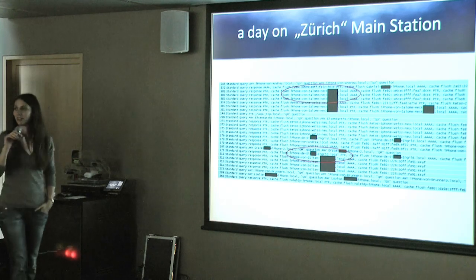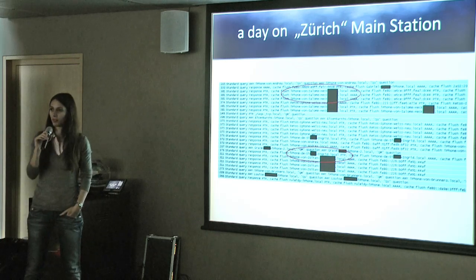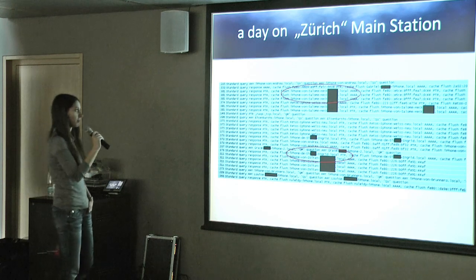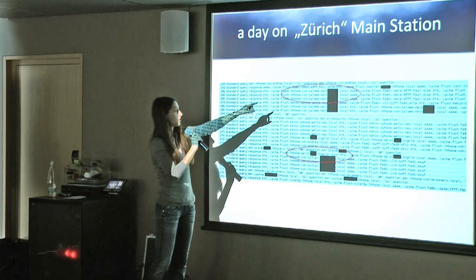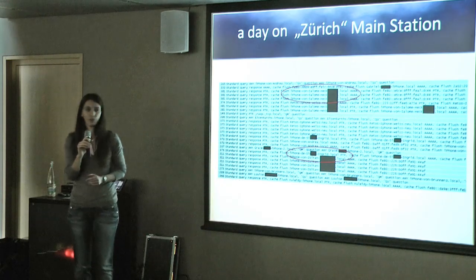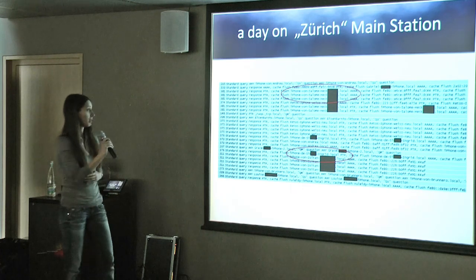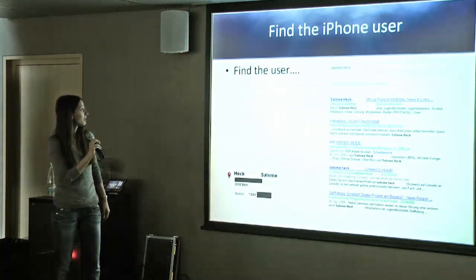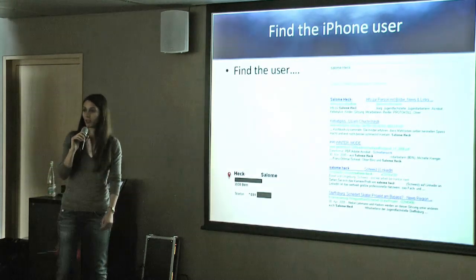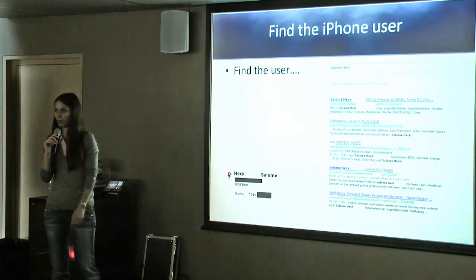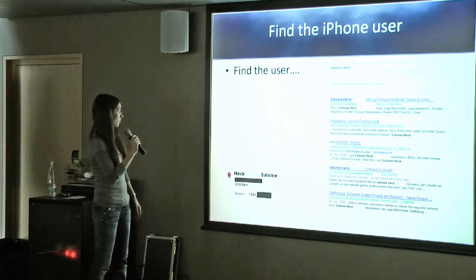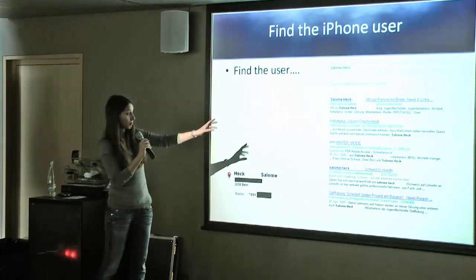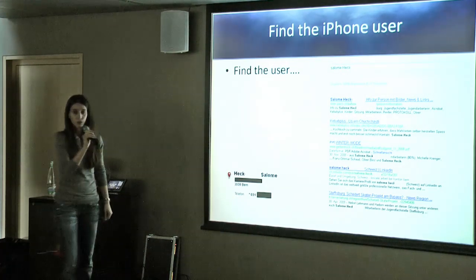We did this at the main railway station in Zurich and obtained information about iPhone users. Some people really use their real full name for their iPhone. With just the name from multicast DNS, you can search Google and find the person — for example, discovering someone lives in Bern, along with their telephone number and other publicly available information.